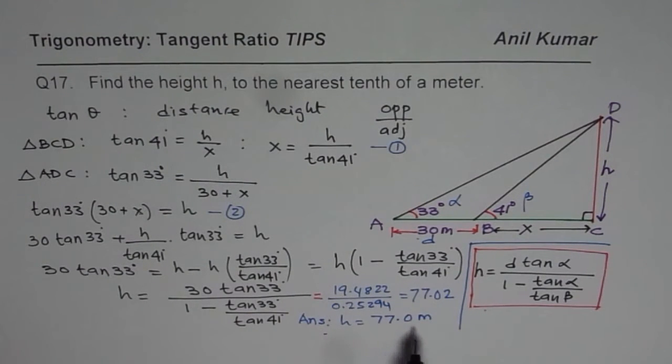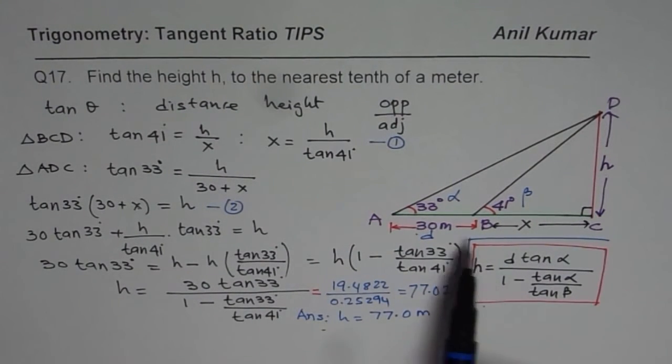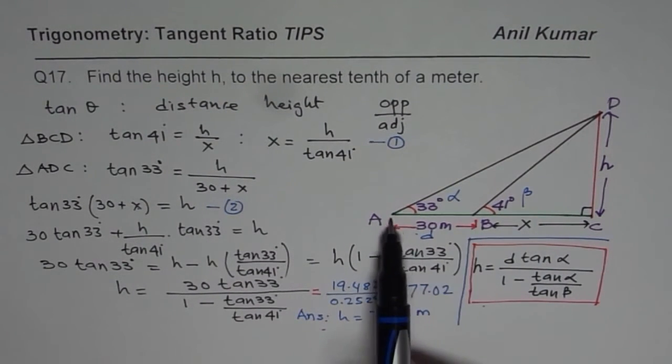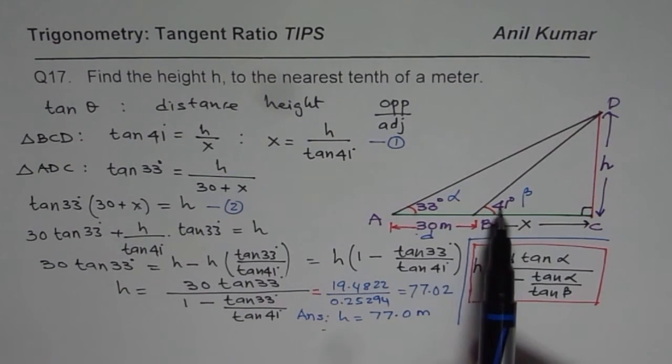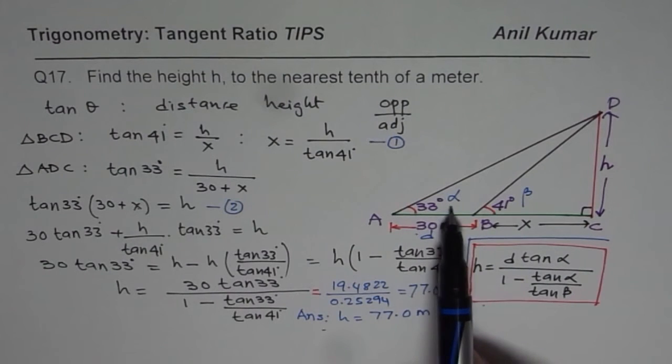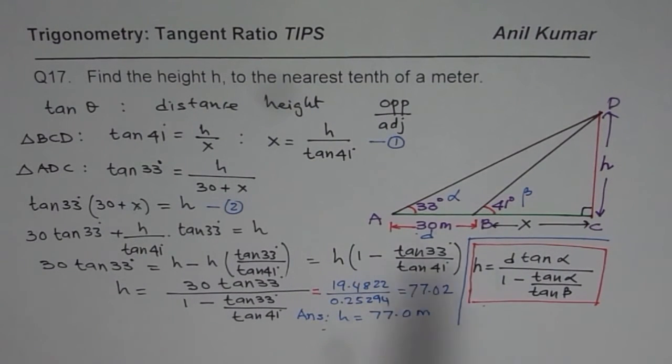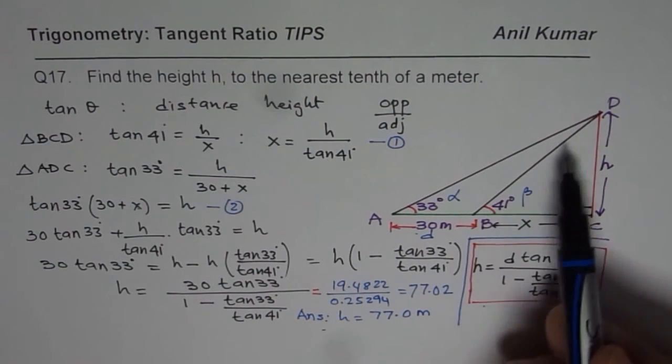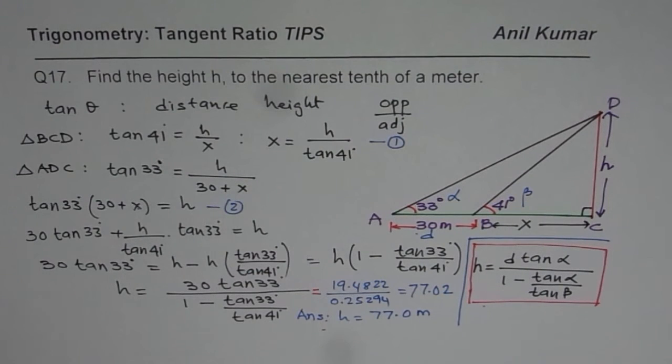In the process of solving, I have shown you how to get a general solution, where D is the separation between these two points, and α and β are angles of elevation. α is the smaller angle at the wider distance, and as you move closer, angle of elevation becomes higher—that is β. You get this kind of formula to work with. I hope that helps. Thank you and all the best.